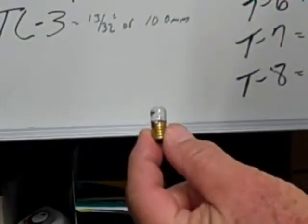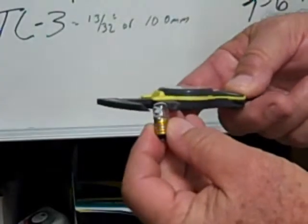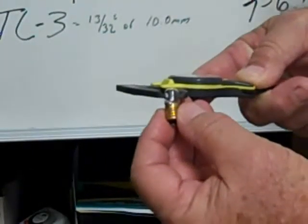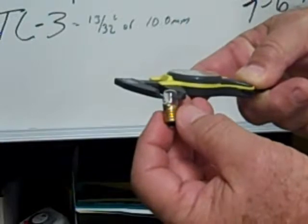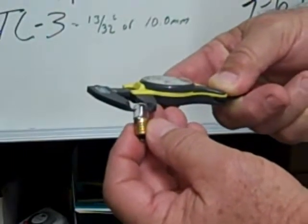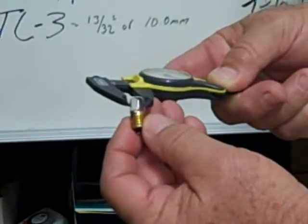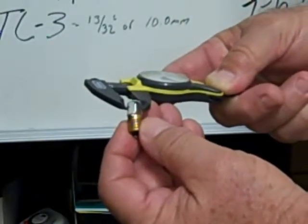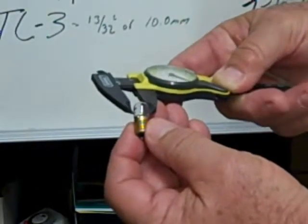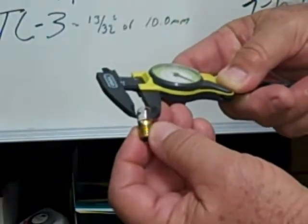This is a T3 bulb, tubular shape, 3 eighths of an inch across the diameter of the envelope, the glass envelope, or 0.375 inches, which is equivalent to 9.5 millimeters.